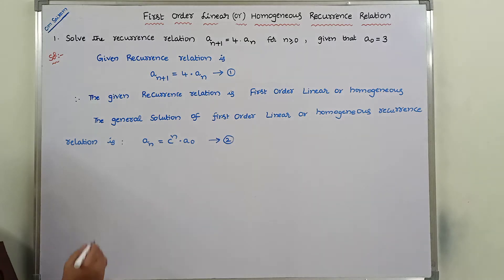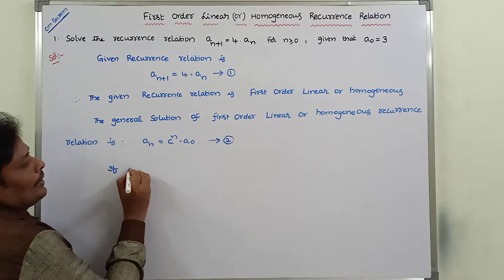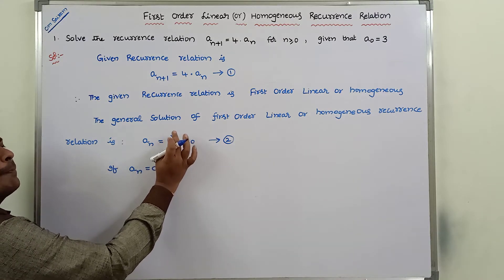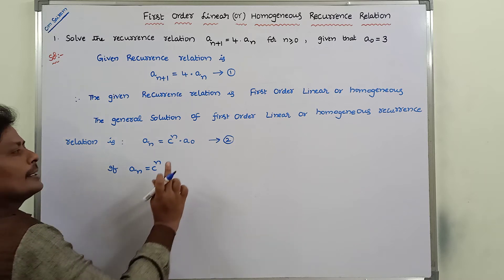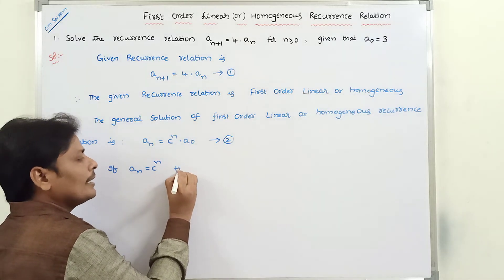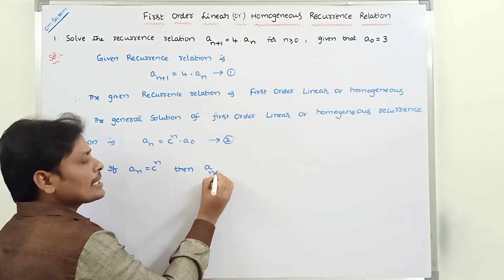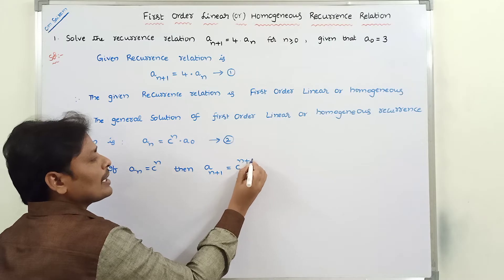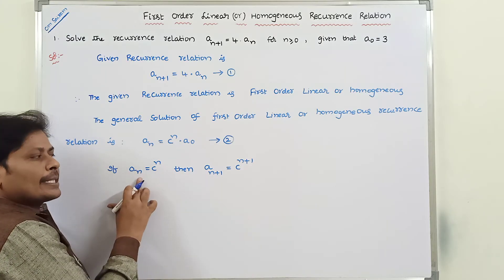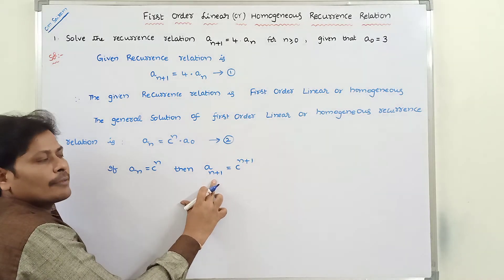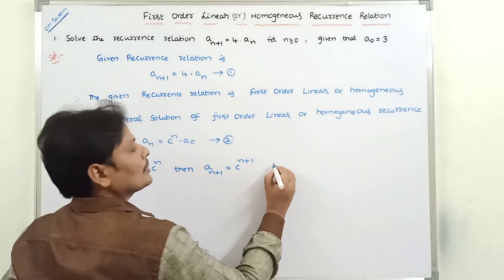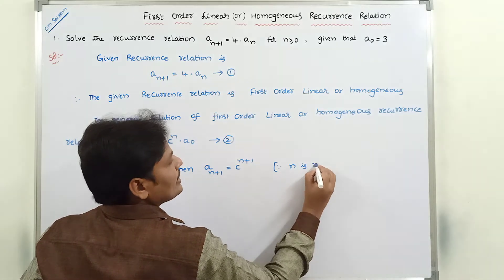Now, if a(n) = c^n, then a(n+1) = c^(n+1). That means in the place of n, we are substituting n+1. So a(n) is replaced with a(n+1), and c^n is replaced with c^(n+1) — that is, n is replaced with n+1.